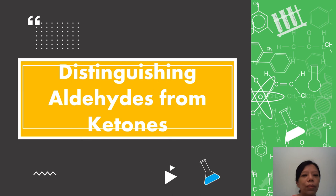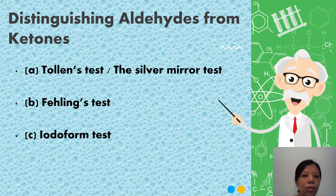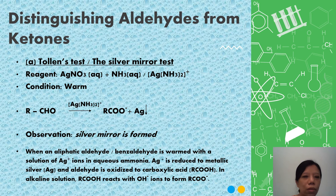Now we will show the tests to differentiate the aldehydes from ketones. These are the tests: Tollens test, also named as the silver mirror test, Fehling's test, and iodoform test.